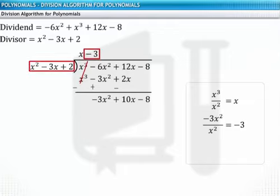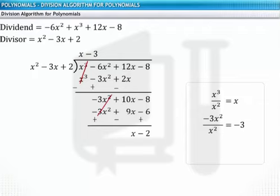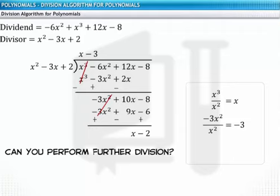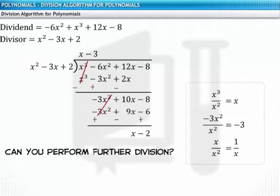Multiplying the divisor with the second term of the quotient and subtracting the product minus 3x square plus 9x minus 6 from the dividend gives x minus 2 as the remainder. Now x minus 2 is our new dividend and the divisor is x square minus 3x plus 2. In order to get the third term of the quotient, we divide the first term, x, of the new dividend by the first term of the divisor, x square. On division, we get 1 divided by x, which is not a polynomial. Thus, this cannot be the third term of the quotient. Therefore, further division is not possible.